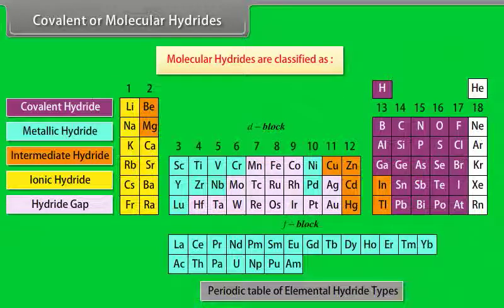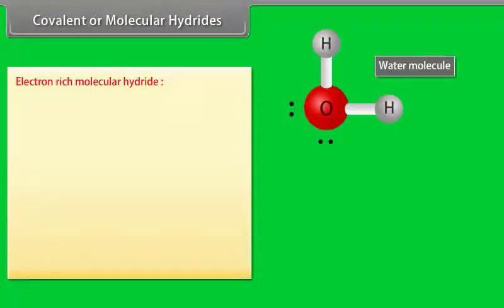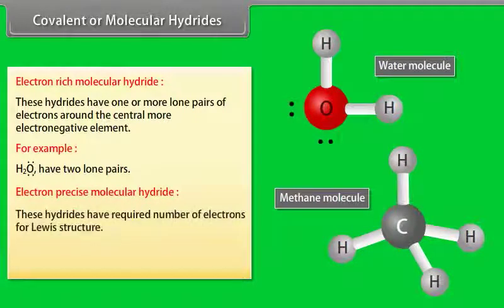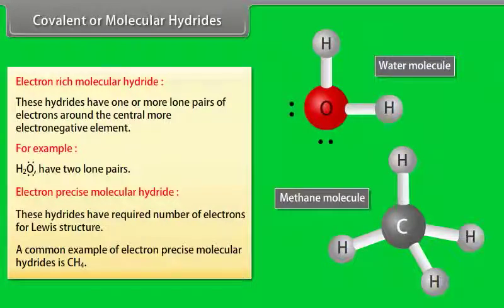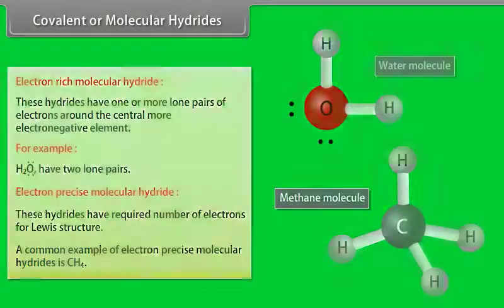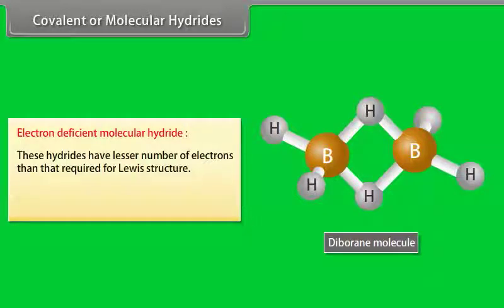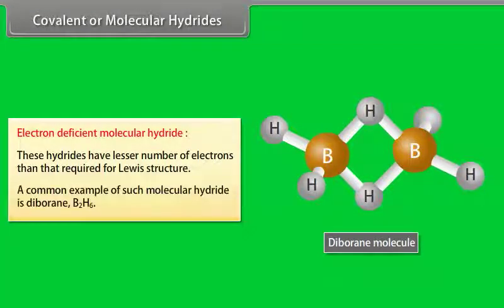Covalent or molecular hydrides are classified as: Electron-rich molecular hydride - these hydrides have one or more lone pairs of electrons around the central more electronegative element. For example, water has two lone pairs. Electron-precise molecular hydride - these hydrides have required number of electrons for Lewis structure. A common example is methane. Electron-deficient molecular hydride - these hydrides have lesser number of electrons than that required for Lewis structure. A common example is diborane.